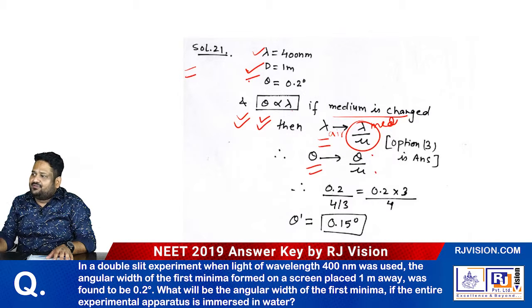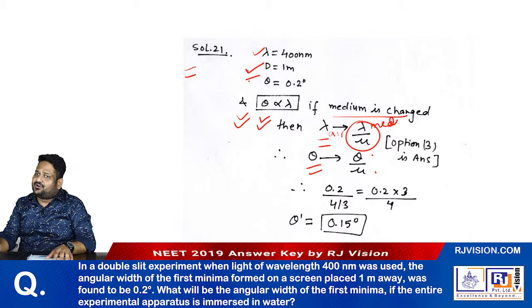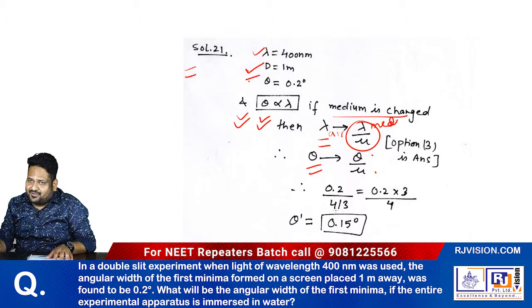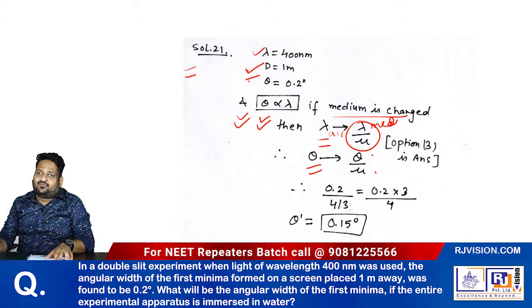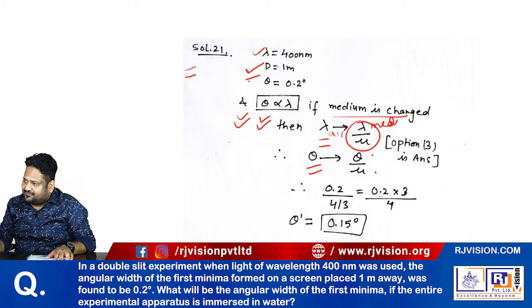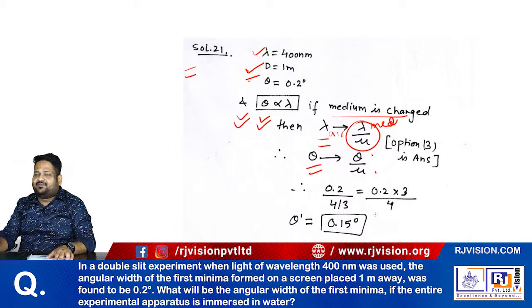If initial theta is 0.2, then theta by μ where μ for water is 4/3, we divide by 4/3. We get 0.2 times 3 divided by 4.